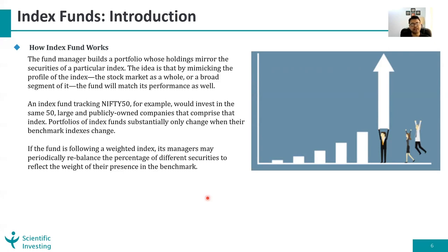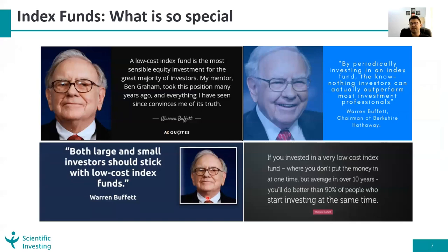Coming to this - most index funds have a growth option and won't have a dividend option. One reason could be that they don't want a lot of activity, and paying dividends regularly involves activity which is against the inherent philosophy. So mostly index funds are growth-based funds. Now, why are we discussing so much about passive investing? I want to quote what Mr. Warren Buffett has said.